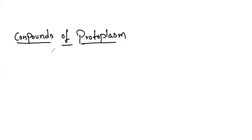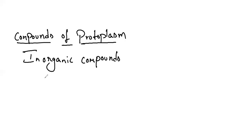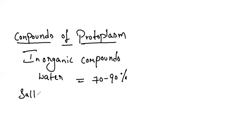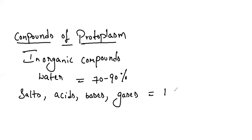Let's see the inorganic compounds. Inorganic compounds generally do not have carbon; organic compounds are carbon compounds. In protoplasm, water is 70 to 90 percent. We also have salts, acids, bases, and gases, which make up 1 to 3 percent.